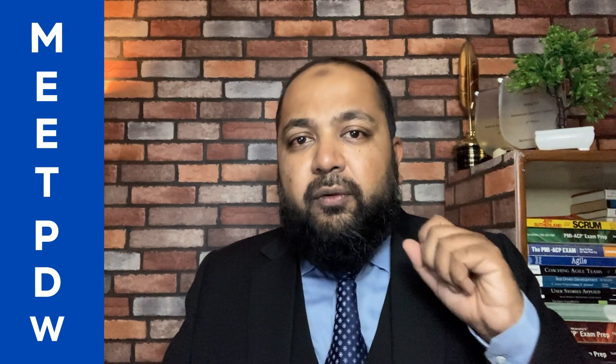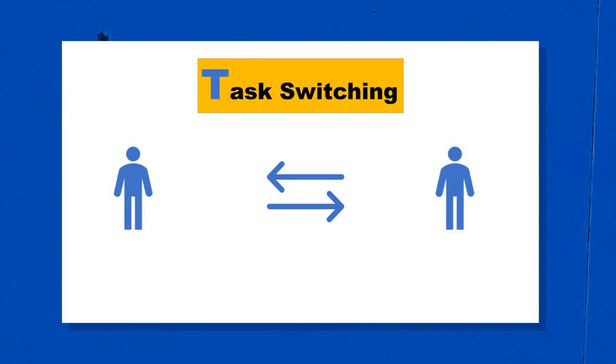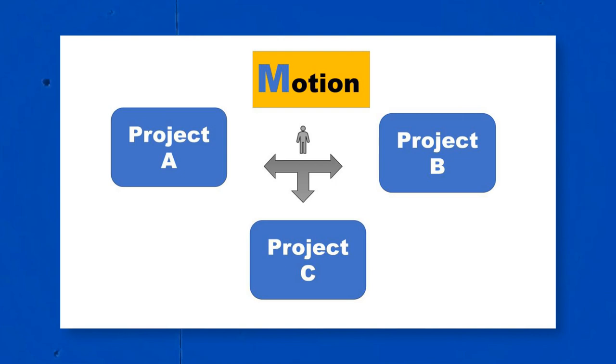T stands for task switching. All of us can relate to working on multiple projects — project A, project B, project C. Developers on two or three projects — it's not going to help them. Scrum masters on three or four projects — not going to help them. There was research done, and in his book, Gerald M. Greenberg has brought this data and facts forward. Let me read it out number by number.